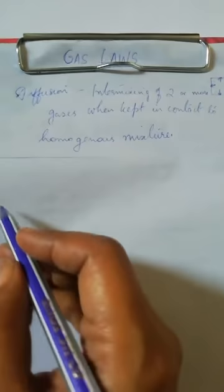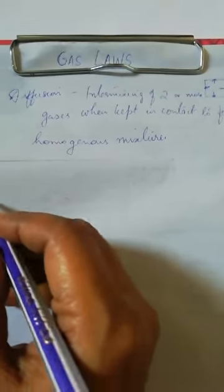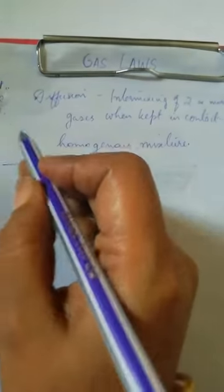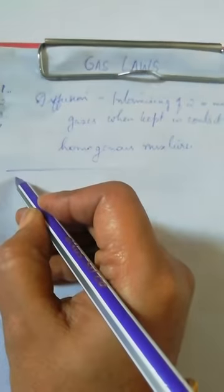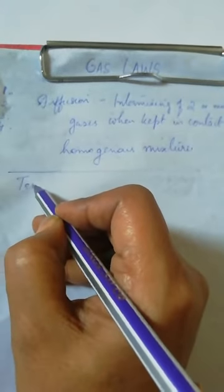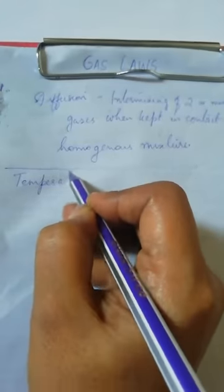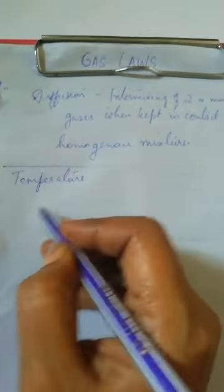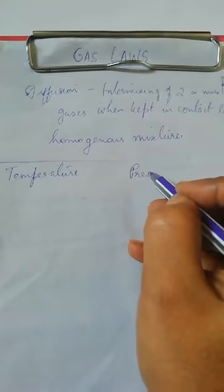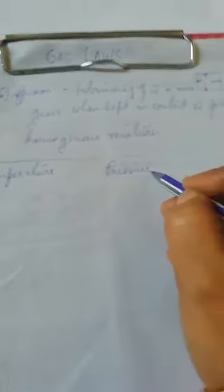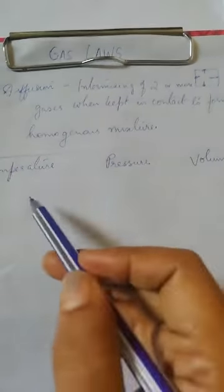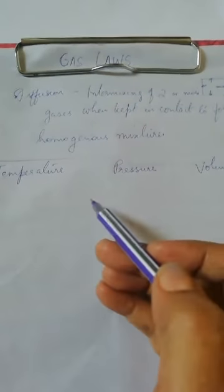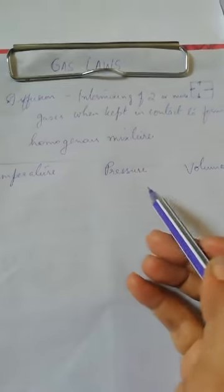Before learning the gas laws, it is very important to know the three entities which are associated to gas laws. The first one is temperature, the second one is pressure, and the third one is volume. A small change in any one of these entities brings about a significant change in the other two.